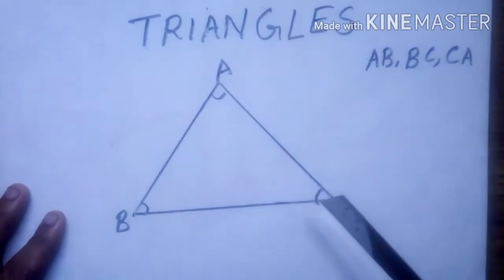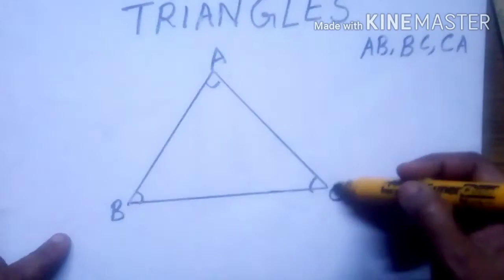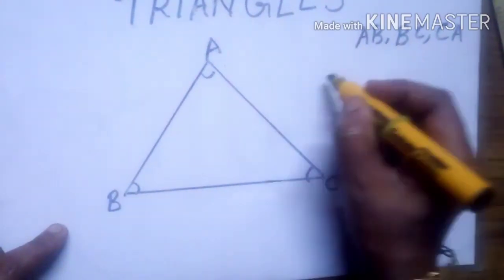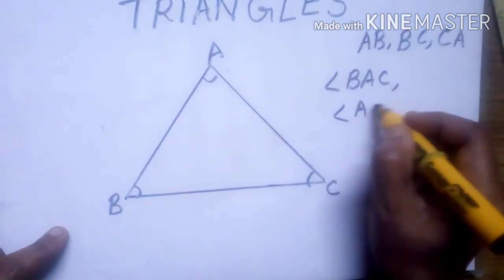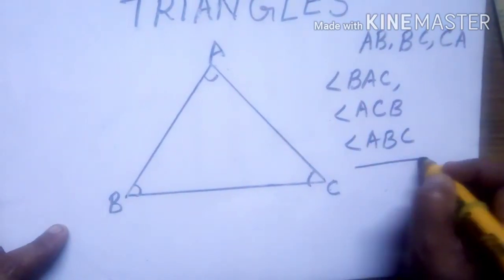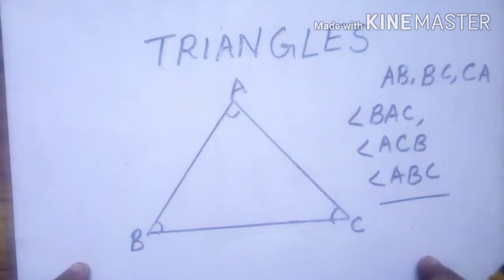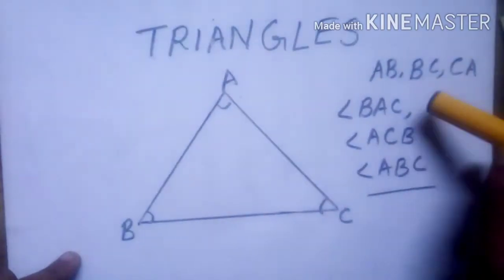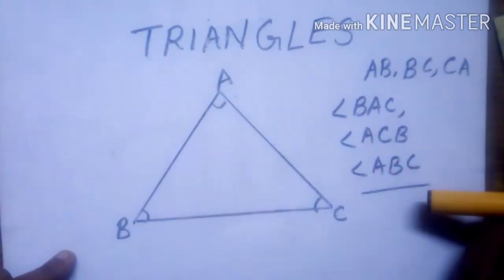The three angles of a triangle are angle A, angle ACB, and angle BAC. These three are its angles. A triangle has three sides, three vertices, and three angles. A, B, C are the three vertices and the three angles.